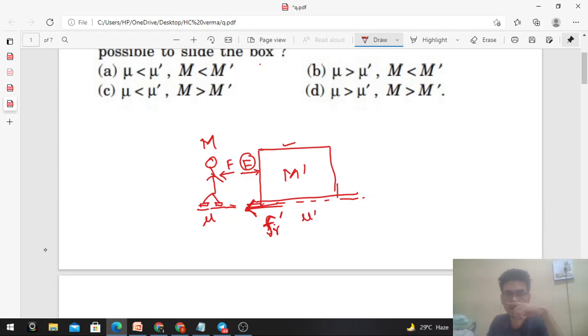Now look at the man. F is acting backward on him, so the man has a tendency to move backward. So the friction force on the man will act forward. Let's call that friction F_r.